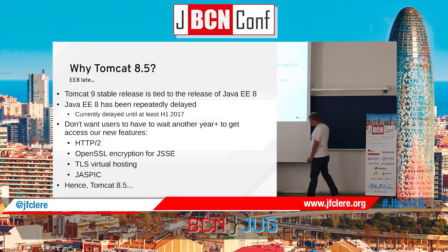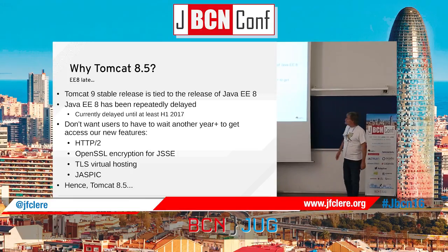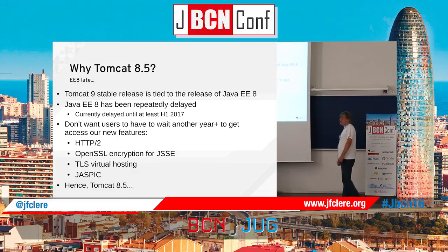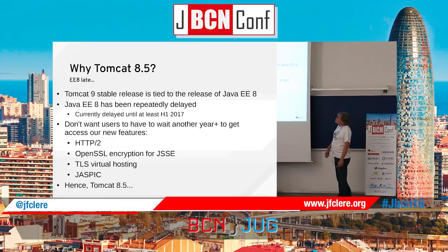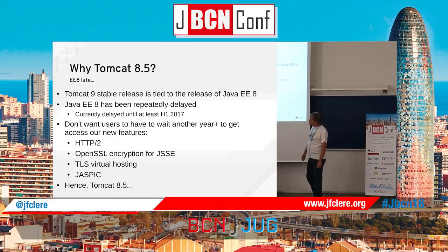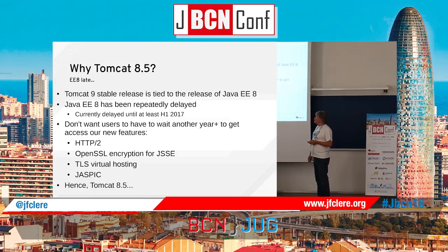So, why don't we have Tomcat 8.5? Well, basically we have implemented the new specification but they are not finished, so we don't have the specification because it is not finished. And then in protocol there's the SSM conclusion for GSSE. In the TLS area, it's also just partial.